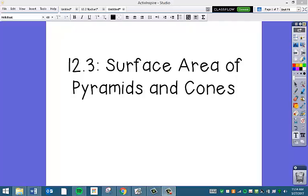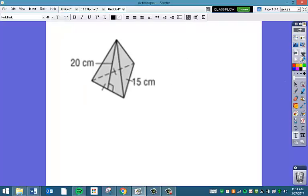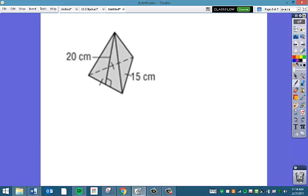Now we're going to find the surface area of pyramids and cones. Remember, pyramids and cones just have one base instead of two. Okay, so this is a pyramid and our base is a triangle.